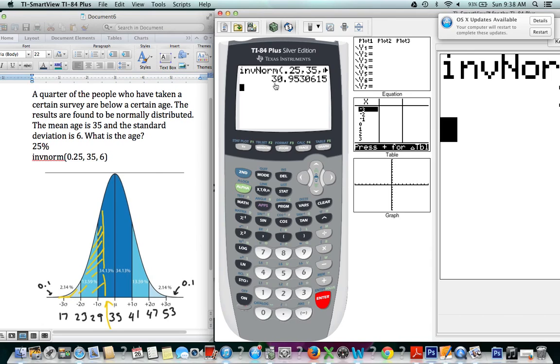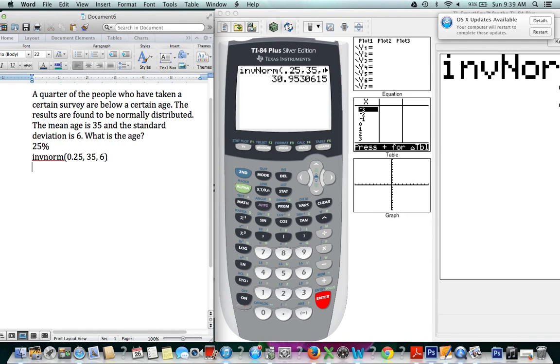And we have the age that is mentioned in this question. So a quarter of the people who have taken a certain survey are below that age. That's the certain age that was referred to in this question. So our answer is 30, 31, we can round up, 31 years.